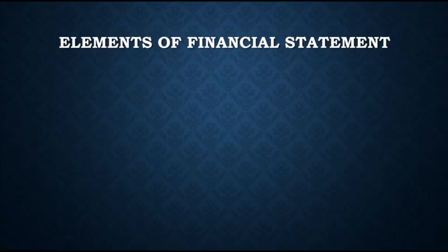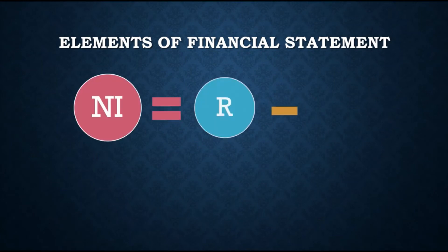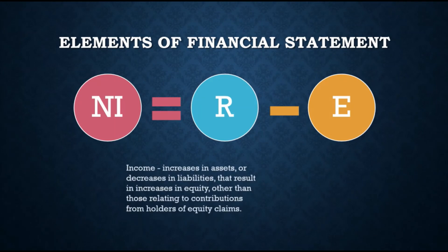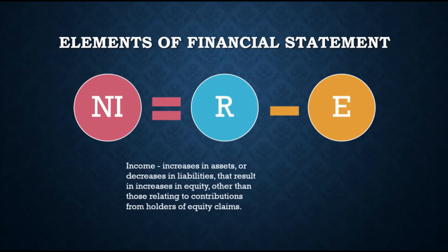There are two more elements of financial statements — revenue or income, and expense — which are found in the statement of comprehensive income or income statement. Income is the increase in assets or decrease in liabilities that results in an increase in equity, other than contributions from holders of equity claims. In other words, these are the earnings of the business. Examples are sales, service revenue, professional fees, rent income, interest income, fees earned, subscription revenue, and commission earned.